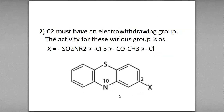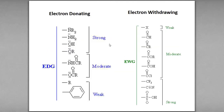C2 must have an electron withdrawing group — a group that is highly electronegative and withdraws electrons. The activity order for various groups is as follows. Groups include CF3, acetyl, and halogens such as chlorine, bromine, and iodine.